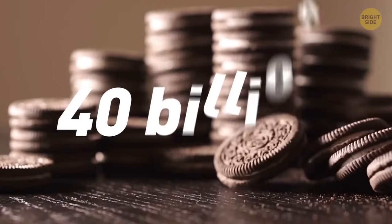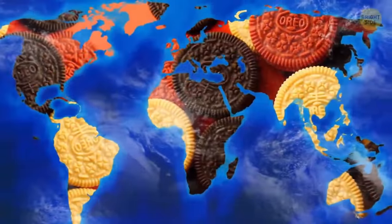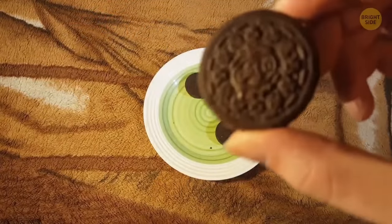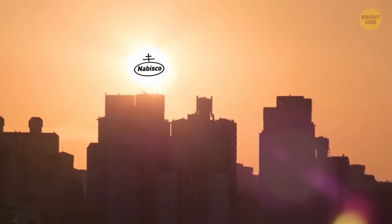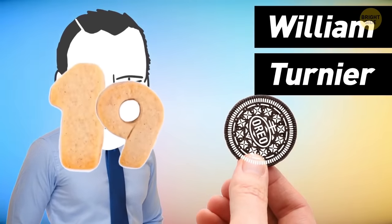Over 40 billion Oreos are made every single year. It's the world's most popular manufactured cookie. The geometric design stamped into these cookies has the Nabisco logo, the symbol of European quality, surrounding the word Oreo. William Tournier created the chocolate cookie design we see today back in 1952.